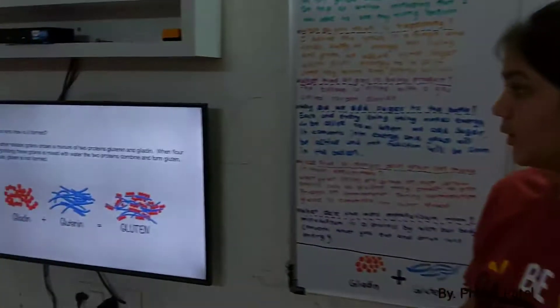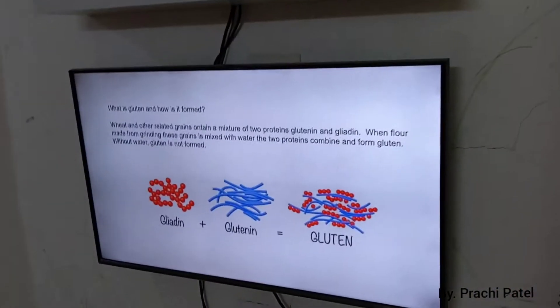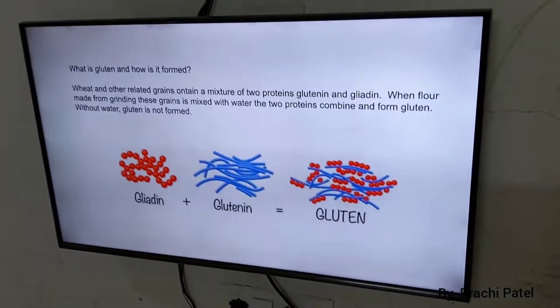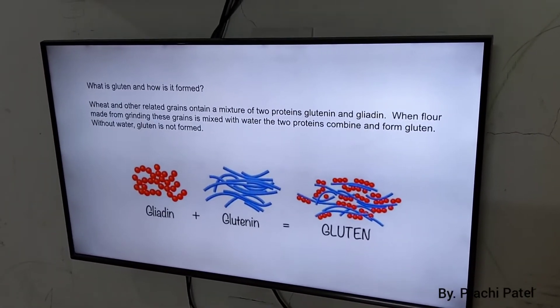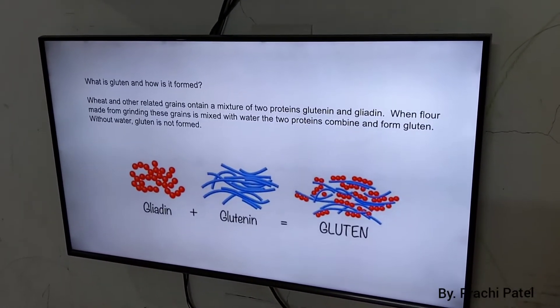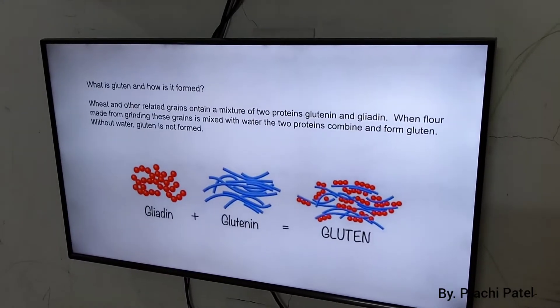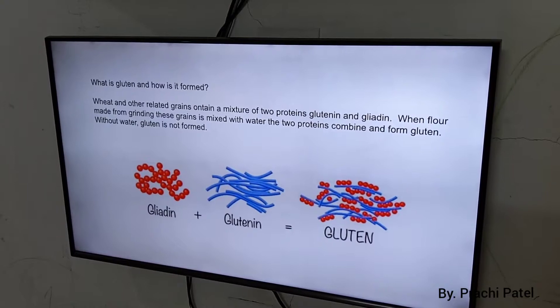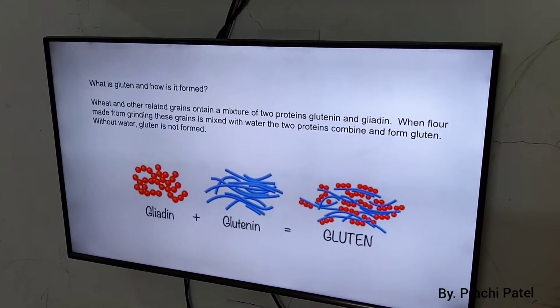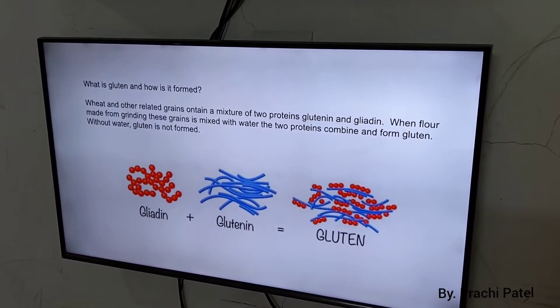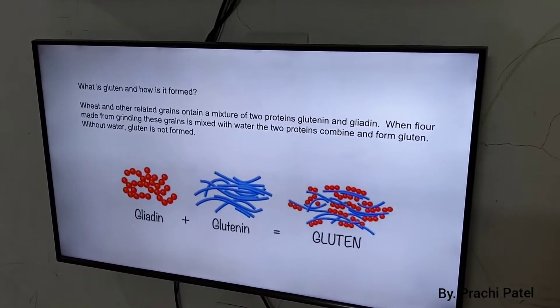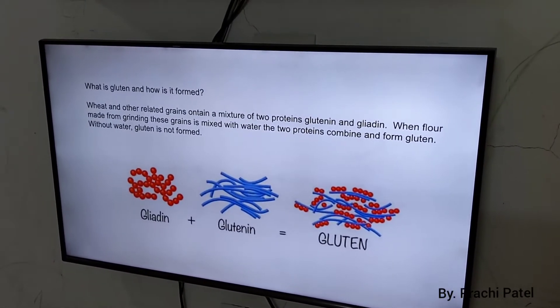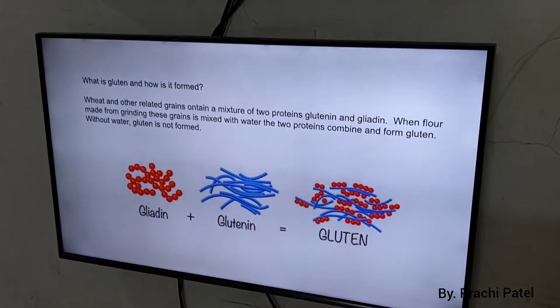Now, you can see over here what is gluten and how it is formed. Wheat and other related grains contain a mixture of two proteins, gliadin and glutenin. When flour is mixed with water, the two proteins combine and form gluten. Without water, gluten is not formed.